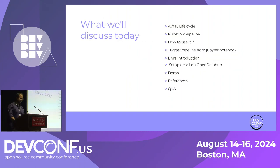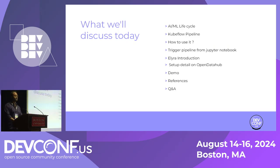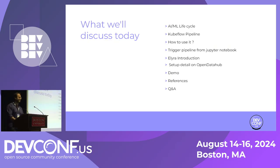Starting with this, today we'll go through what the AI/ML life cycle is — that's particularly what you do every day. We'll focus on one aspect of it: the model development cycle. Then we'll understand what Kubeflow is, and explore whether we can execute things directly from Jupyter Notebook without having data scientists learn Kubeflow pipelines or do that engineering. And then I'll show you what Elyra is — that's the Jupyter extension we've developed — and take you through a demo.